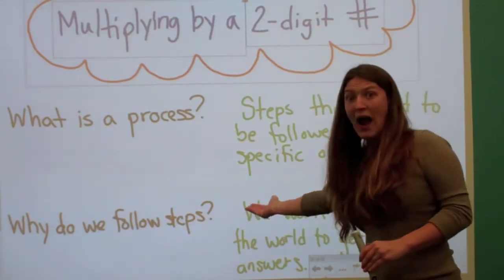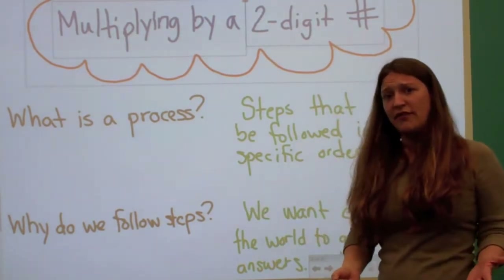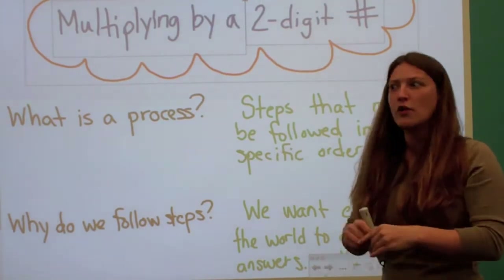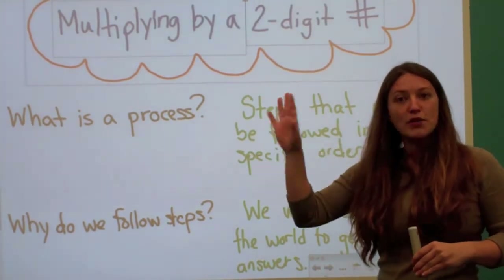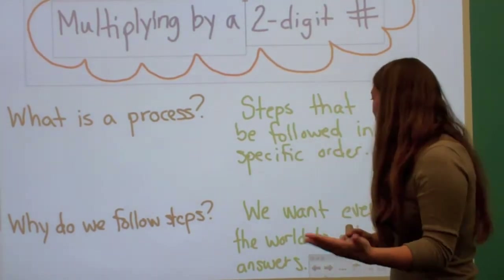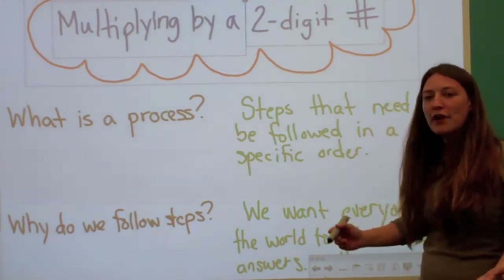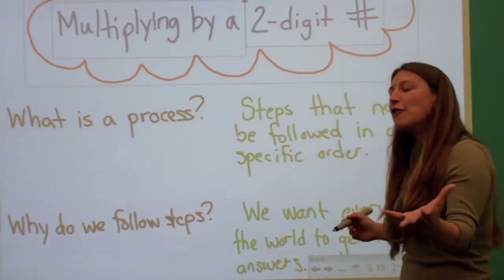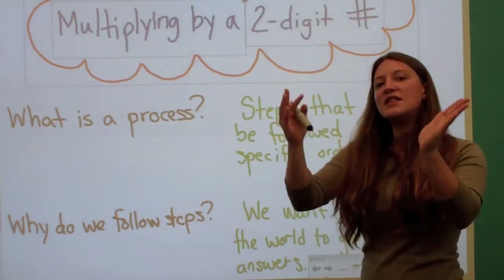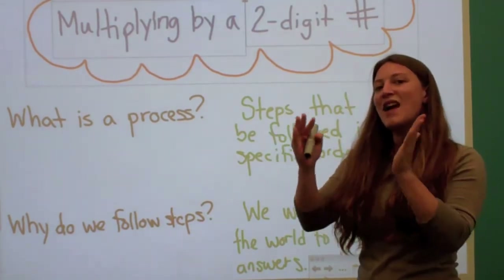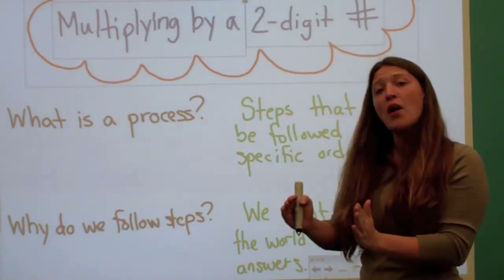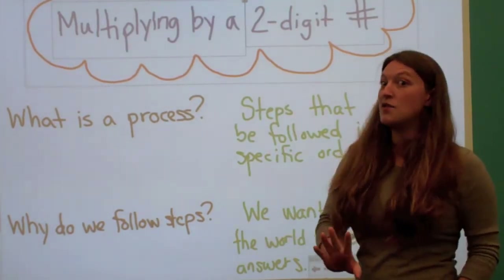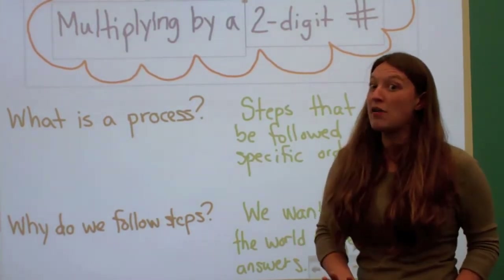Why do we have to follow these steps in number order — one, two, three, four? We want everyone in the world to get the same answer. If everybody in the world is following this set process, we will all get the same number every single time, as long as we do our math correctly.